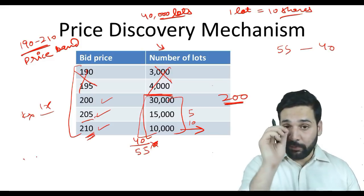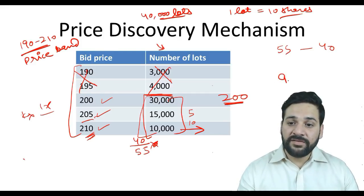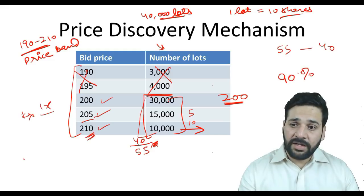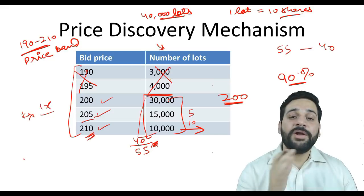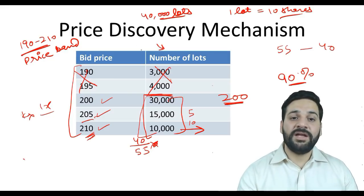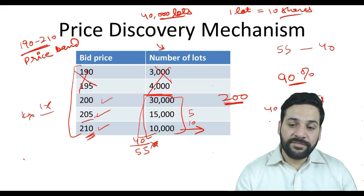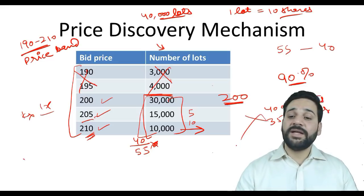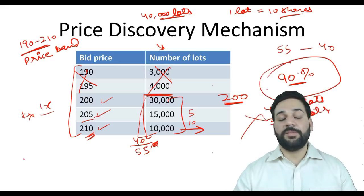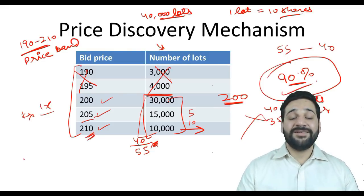One more important rule: if an issue is undersubscribed and less than 90% of the issue is subscribed, all the money must be refunded. So if they wanted to raise money for 40,000 lots and only received bids for 35,000 lots, they must refund all the money because 90% subscription is mandatory as per SEBI ICDR law.